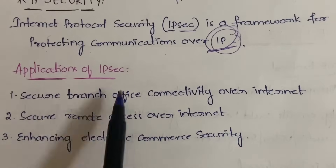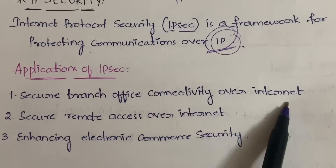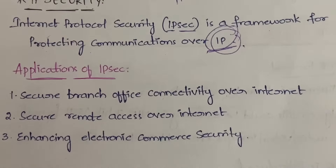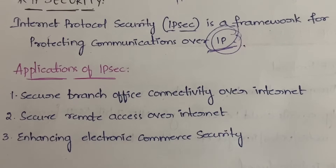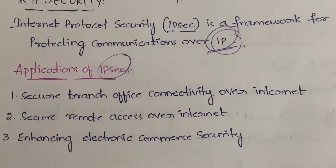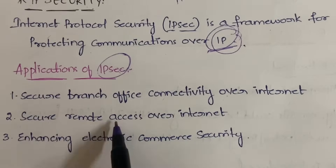The first application of IP security is secure branch office connectivity over the internet. For example, take a bank — a bank will have different branches, and each branch has to be connected with the others. Since banking is very confidential, it needs security, and in that case you would be using IP security.